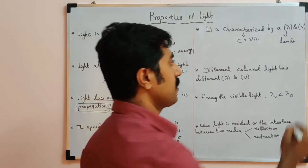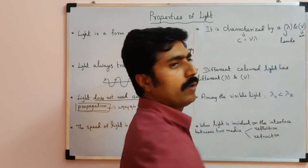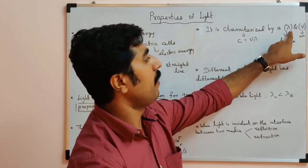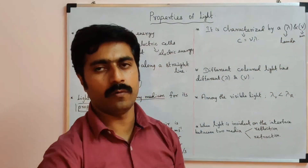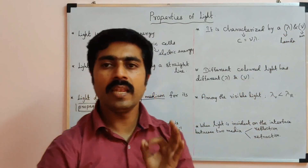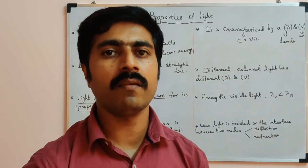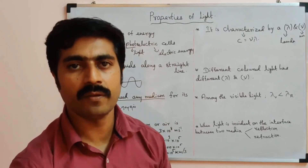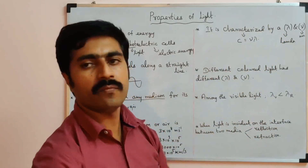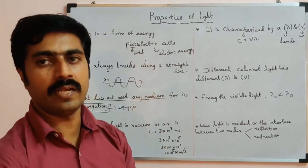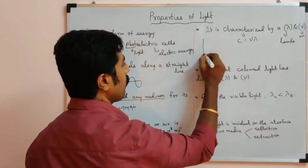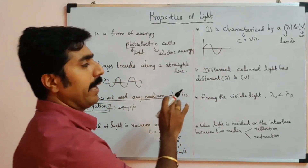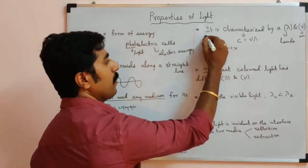The relation between wavelength and frequency: lambda is the wavelength, nu is the frequency. Wavelength is the length of a wave. Frequency is the number of vibrations produced.